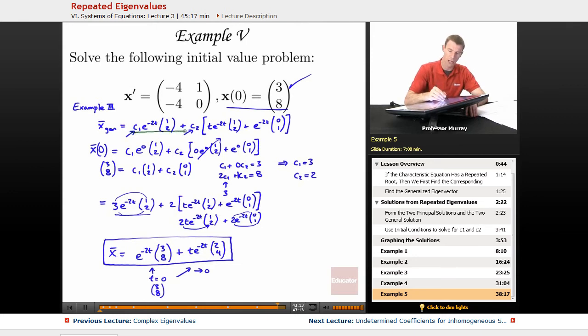I started out with the general solution that I worked out in Example 3. Then I plugged in t = 0 here based on my initial condition. Just wherever I saw a t, I threw in a 0. So all my e^(2t)s become 1, and the t e^(2t) actually drops out and becomes 0 because of that 0. I end up with c1 times (1, 2) plus c2 times (0, 1).